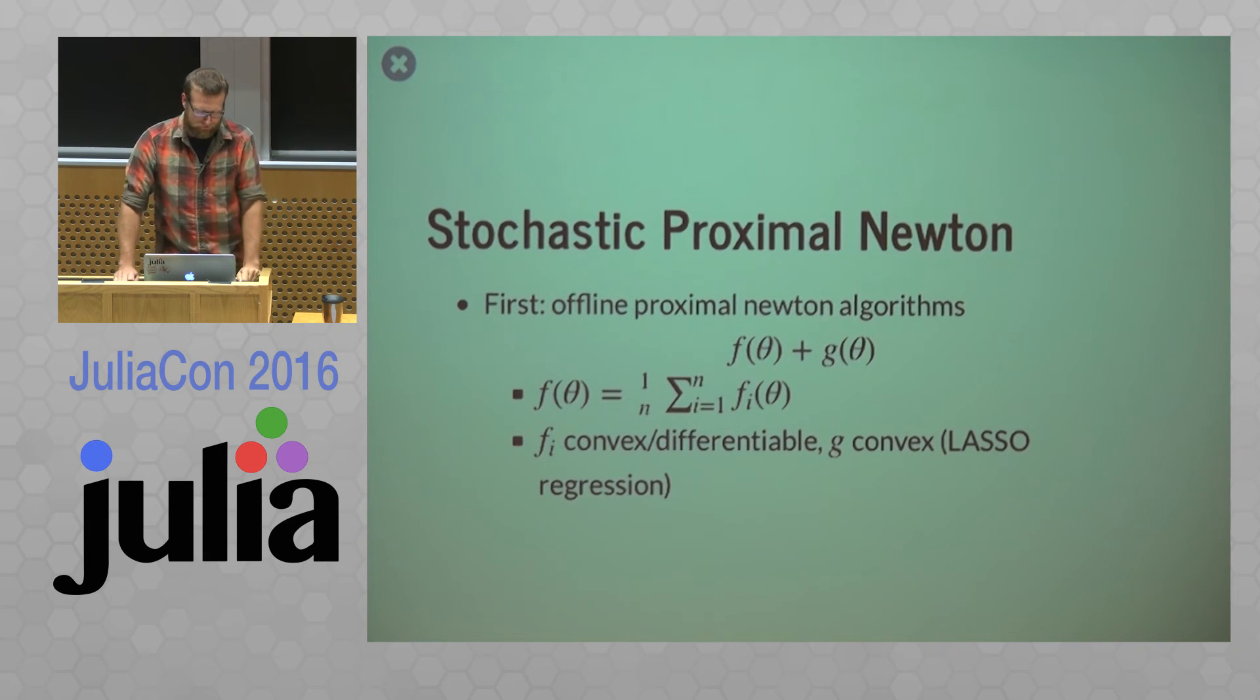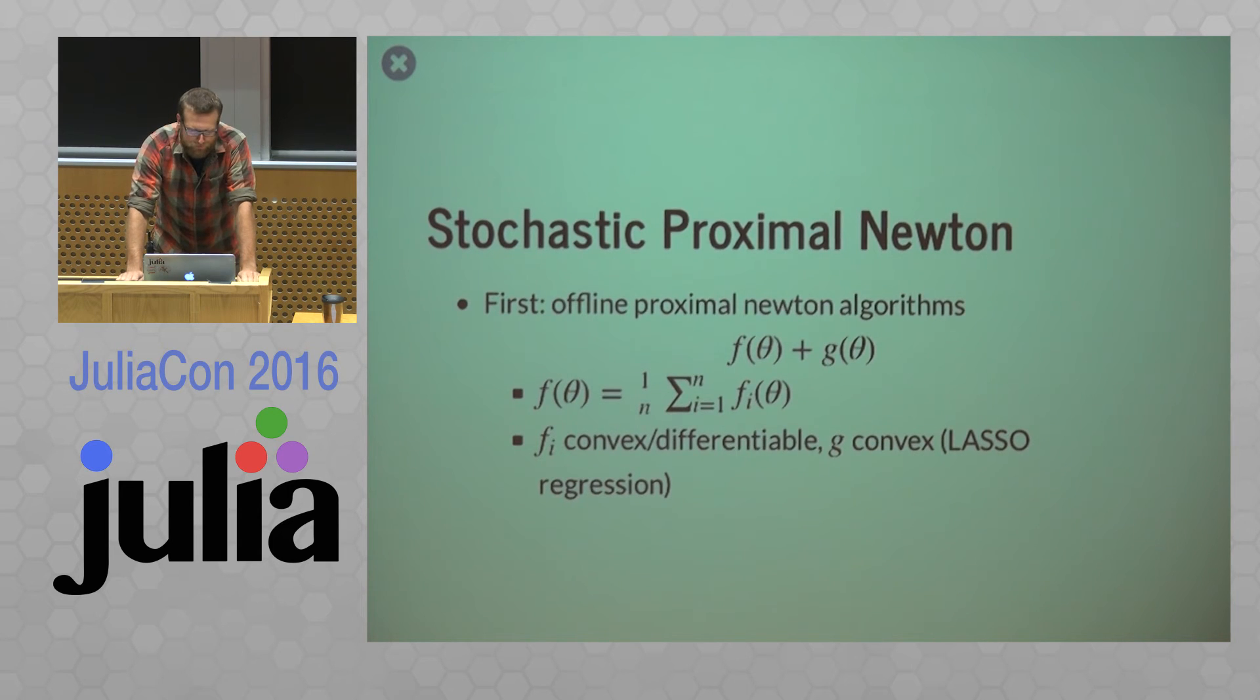Another one of the cooler classes of algorithms I'm looking at is something called stochastic proximal Newton algorithms. So just like last time, I'm going to have to go through the offline version first. So say we have our objective function is the sum of two things. So we get f of theta plus g of theta. And our f is just this kind of sum or this mean of functions of fi's. And all these fi's are convex and differentiable and our g is convex also, but not necessarily differentiable. So lasso regression and logistic regression with the ridge penalty, all that stuff kind of falls into this framework.